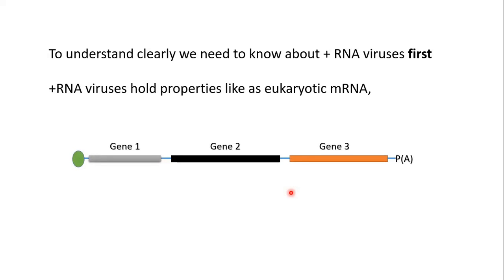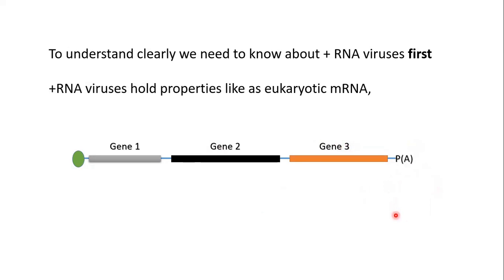As with a typical messenger RNA of a eukaryotic gene, this is also the genome of a plus sense RNA virus, with a five prime cap structure, gene one (open reading frame one), gene two (open reading frame two), gene three (open reading frame three), and as usual, a polyadenylation tail.